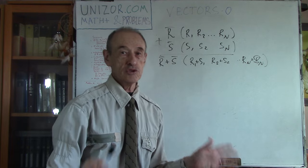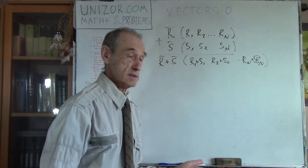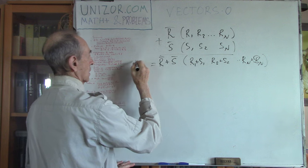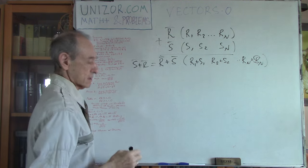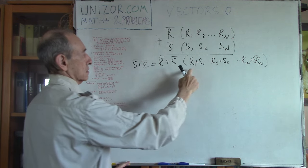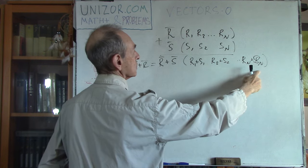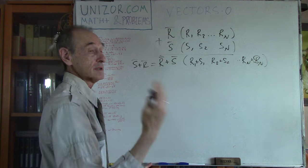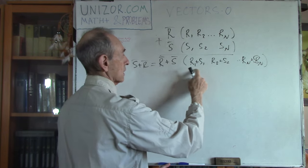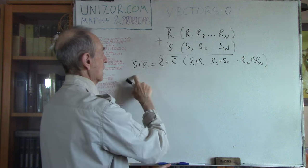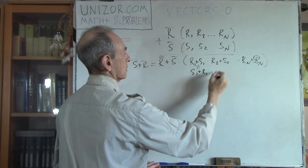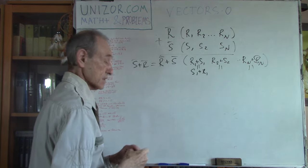This is very natural — no problem with this. It has certain properties. For example, one of the properties is the commutative law. Because if you change the order of summation of each component, and since addition of real numbers is commutative — 2 plus 3 is exactly the same as 3 plus 2 — on every place you will have exactly the same number. So we have this commutative law.